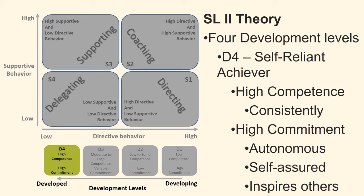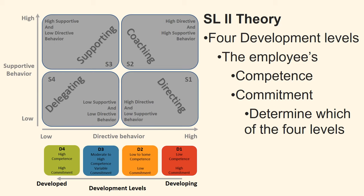Development level 4: the employee is a self-reliant achiever. The employee has high competence — consistently competent and recognized by others as an expert. The employee has high commitment: they are autonomous, self-assured and justifiably confident, inspired and inspires others. The competence and commitment of the employee in relation to the task or goal determine which of the four levels of development the employee is placed in.